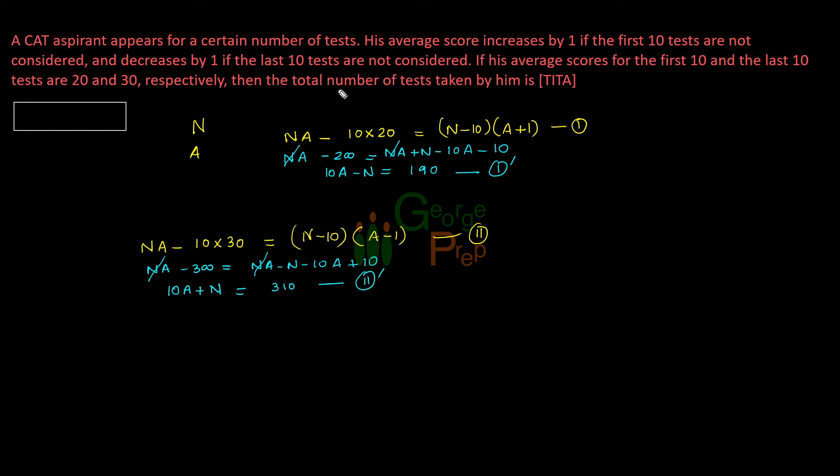In the question they are asking for the value of number of tests taken, so we have to find the value of N. We can do 2 dash minus 1 dash, which will directly give us the value of N. So 2 dash is 10A plus N and I subtract from that 10A minus N. RHS will be 310 minus 190. So 10A minus 10A gets cancelled. N minus of minus N comes to 2N and here we have 120. So N directly comes to 60. Answer for this question is 60.